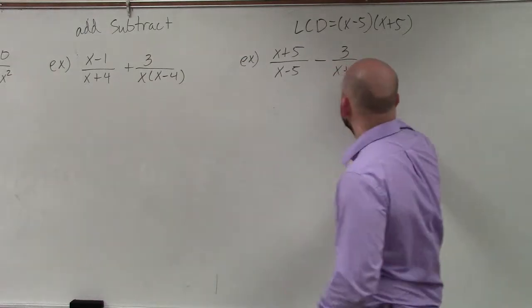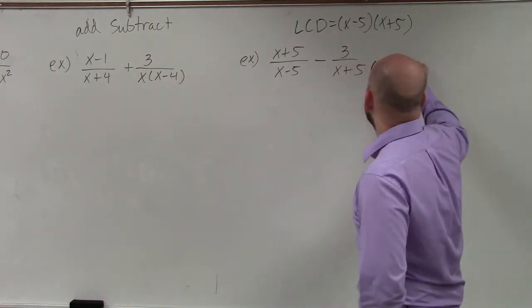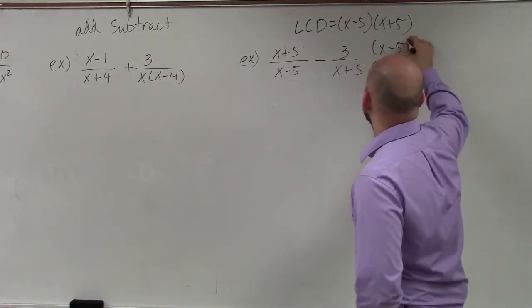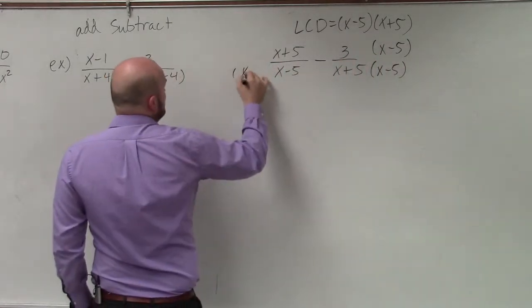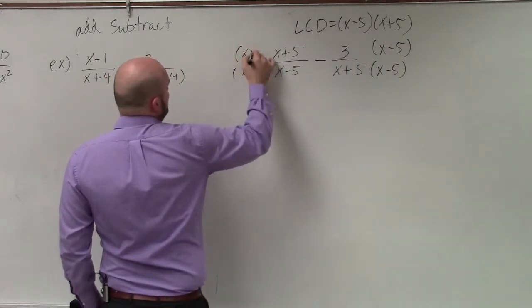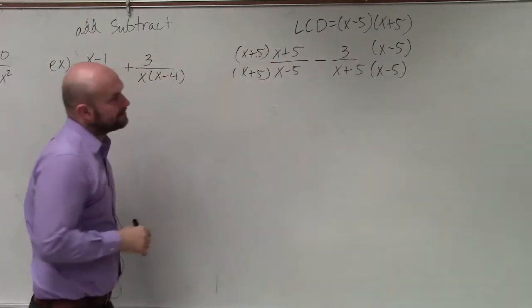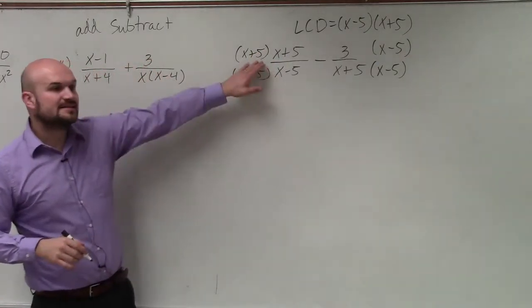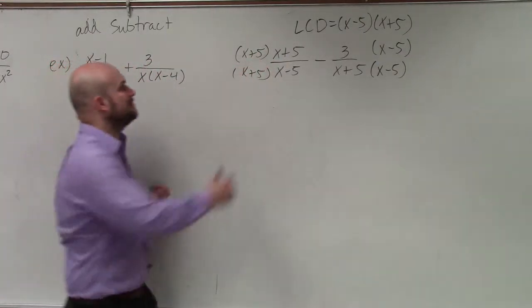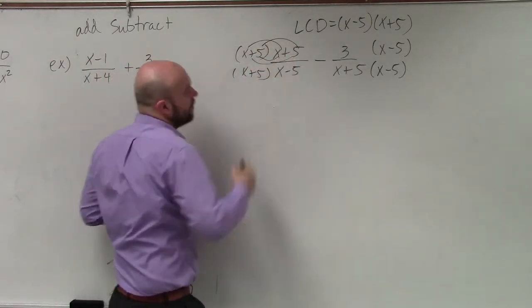So then what we do is we multiply by a factor that's going to produce our common denominator. So now I simply need to multiply this on the left-hand side. Remember, ladies and gentlemen, we need to apply FOIL.